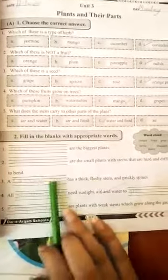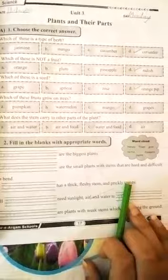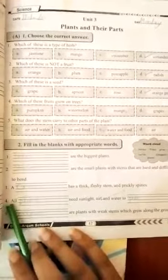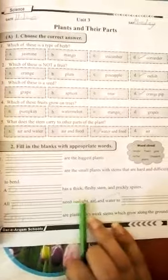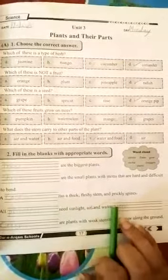Number three, a blank has a thick fleshy stem and prickly spines. Answer is cactus. Number four, all plants need sunlight, air, and water to blank. All plants need sunlight, air, and water to grow.